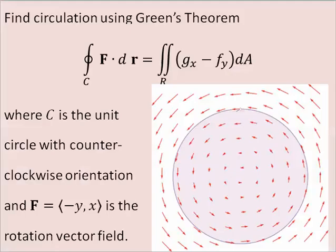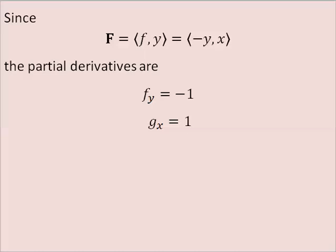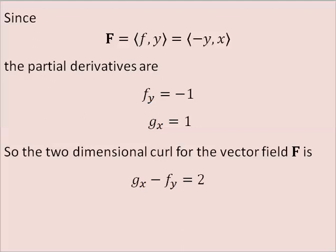Let's find circulation using Green's theorem, where C is the unit circle with counter-clockwise orientation and F is the rotation vector field. The partial derivatives: F partial Y is negative 1 and G partial X is positive 1. So, the two-dimensional curl is 2.